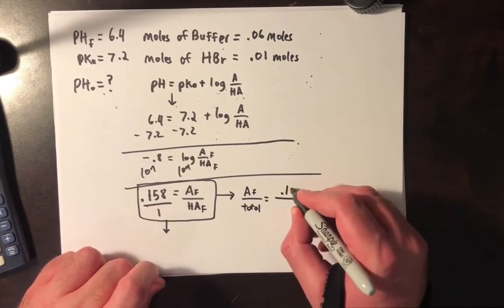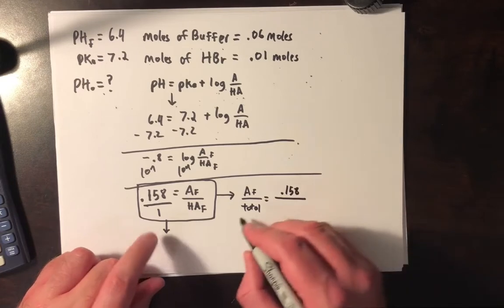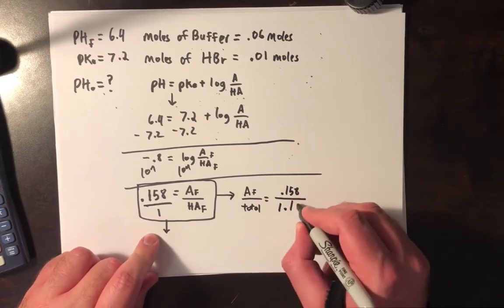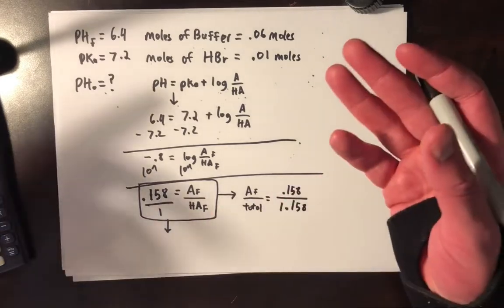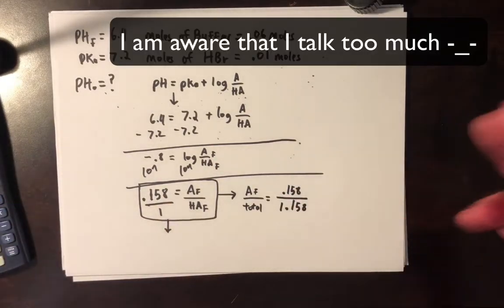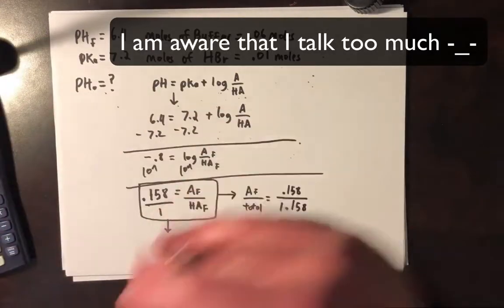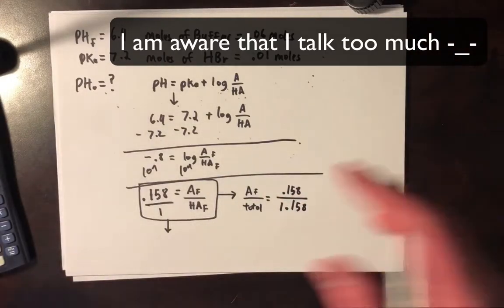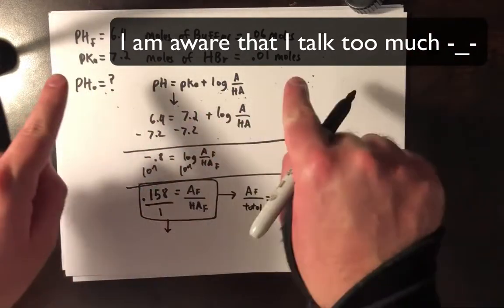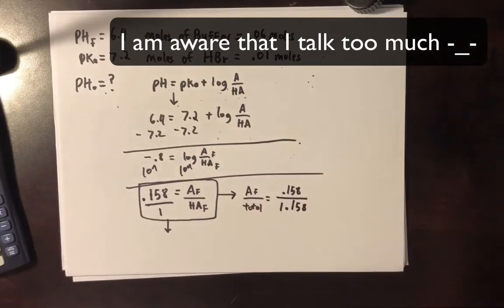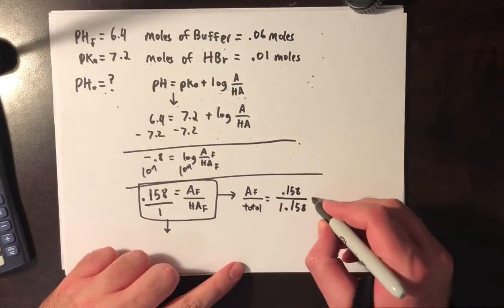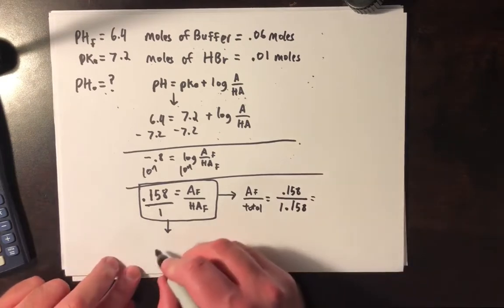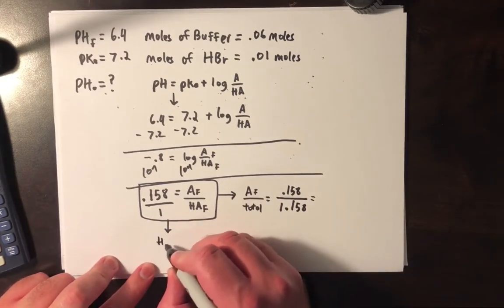Well, how much A⁻ do I have? I have 0.158. And then the total is 1.158. The beauty of this is that it's dimensionless. And so it doesn't really matter what the actual number of moles is. We don't care about it. It's dimensionless. And that's why I love the Henderson-Hasselbalch equation a lot more than ice tables or other more difficult things that you have to do out there because it's not dimensionless. And you have to work with units and worry about that stuff.